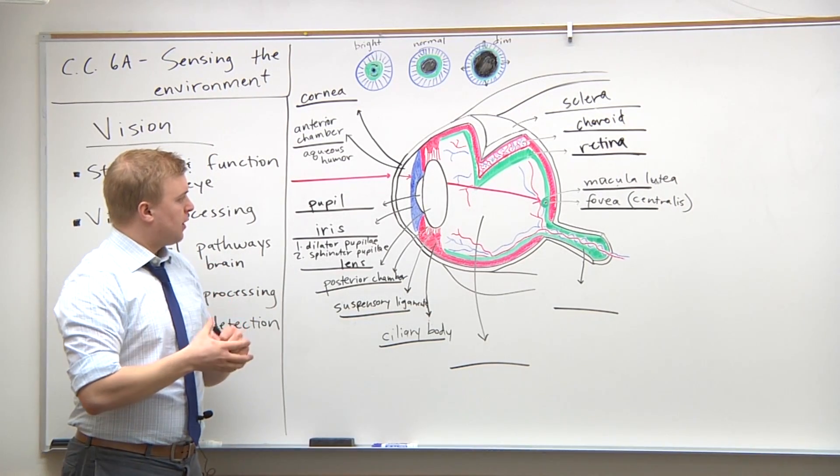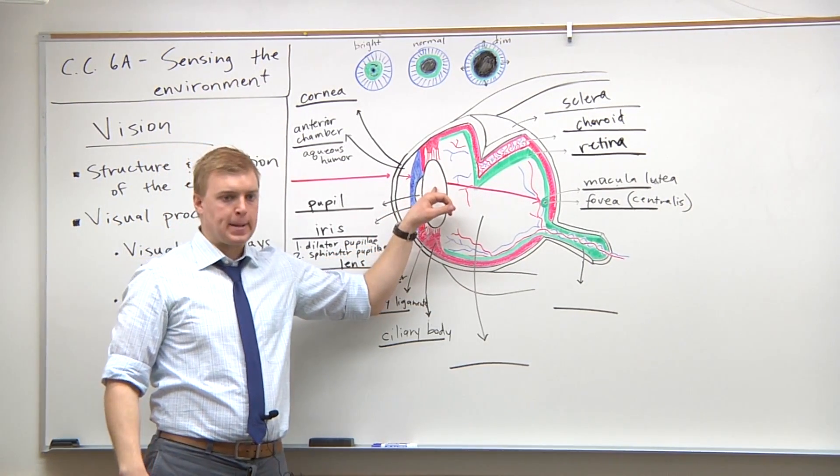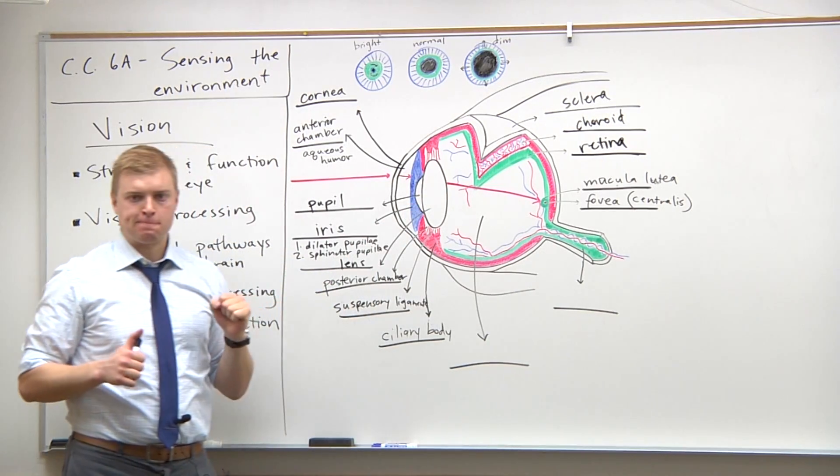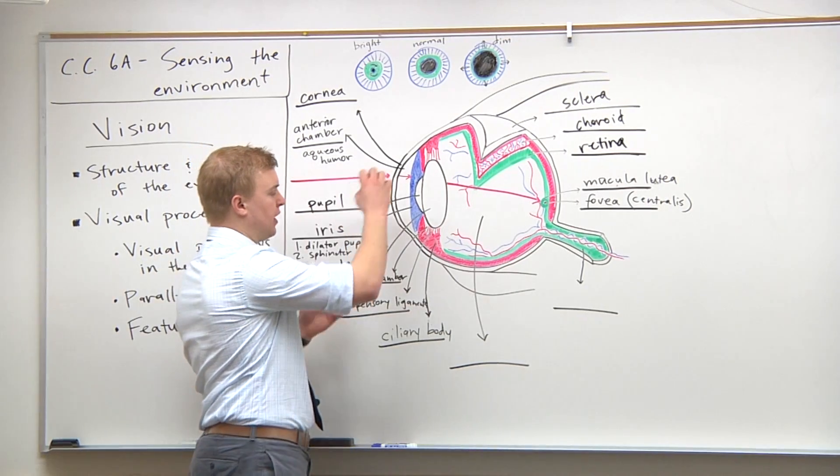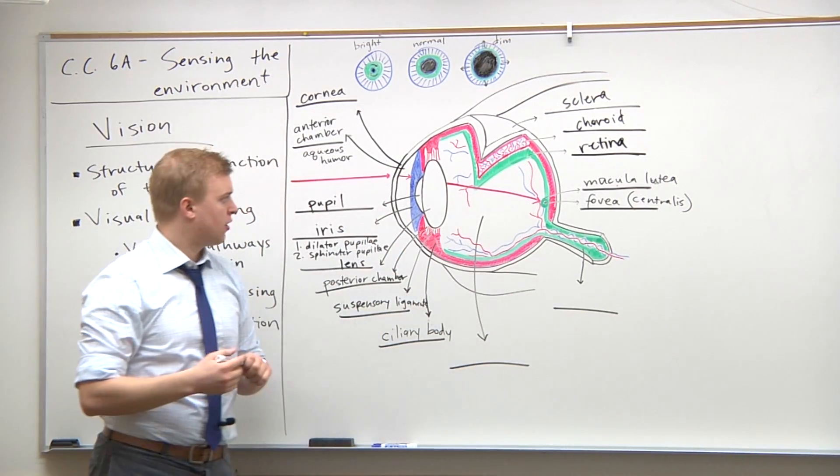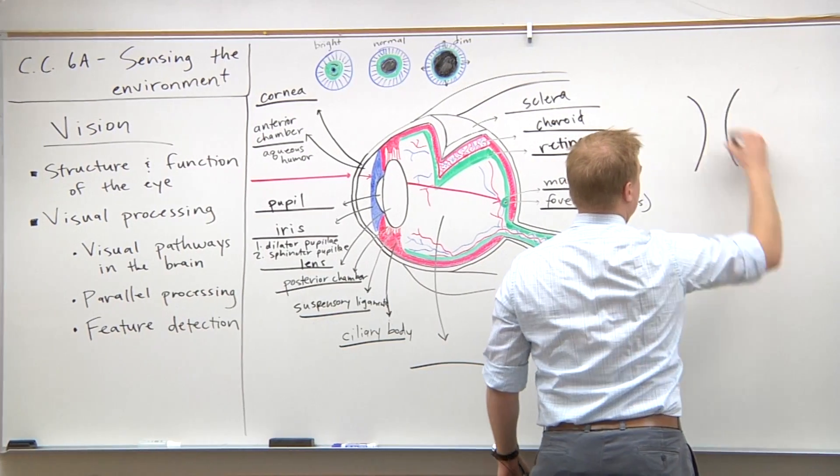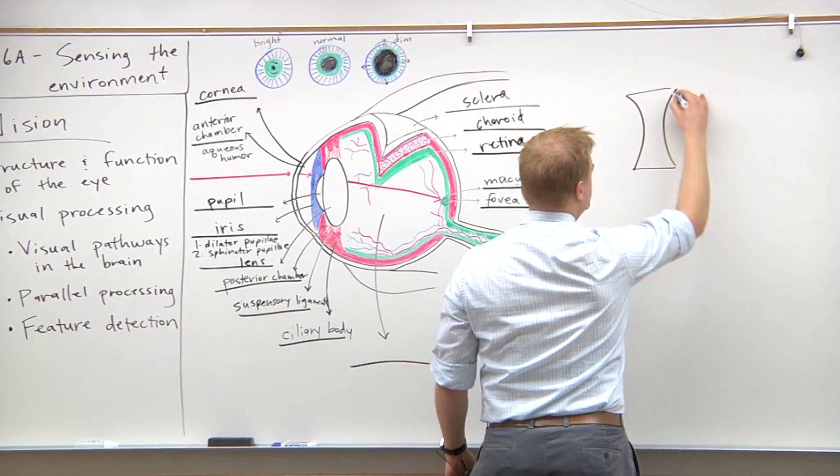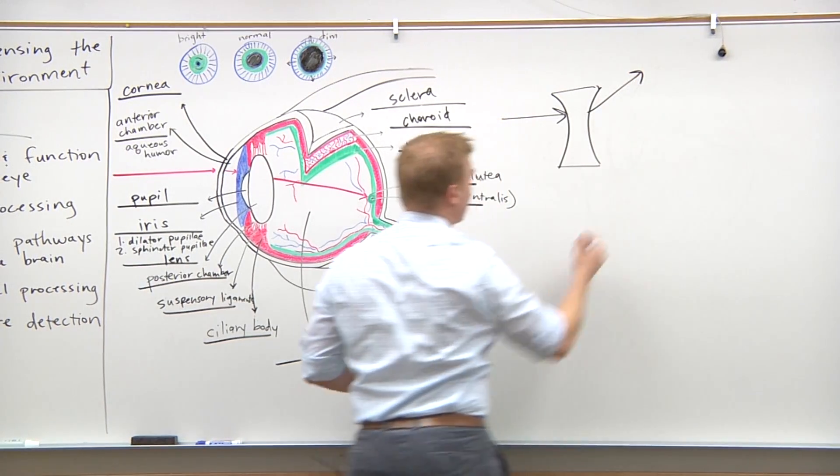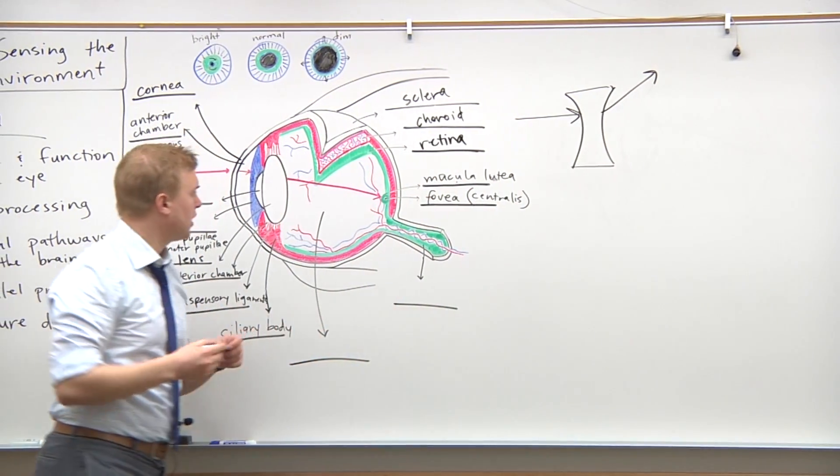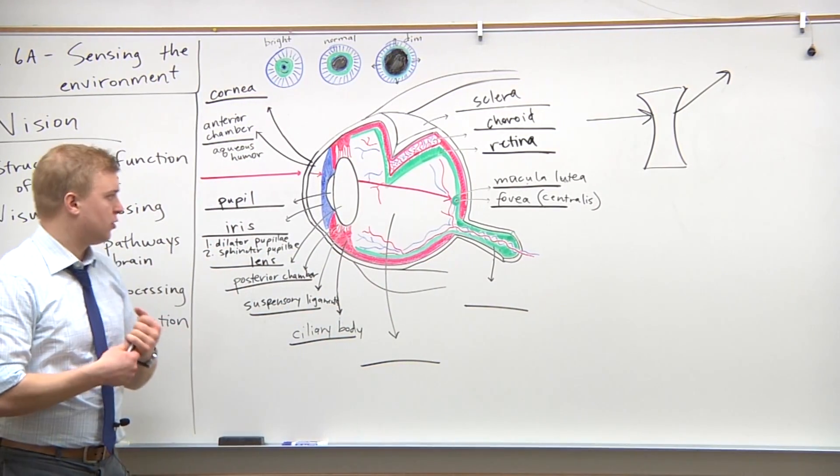What kind of lens is this in our eye? Convex or concave? Convex, good. So it's converging. If it was a concave lens, which we'll talk about more in the physics session, the light ray would diverge. Obviously we wouldn't want that, because then we could never focus the image on the macula lutea.